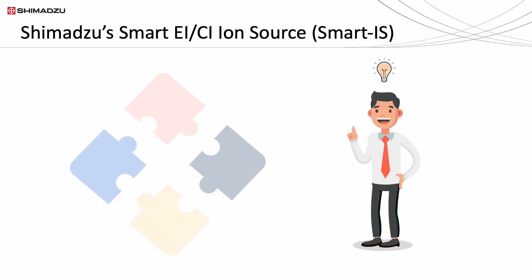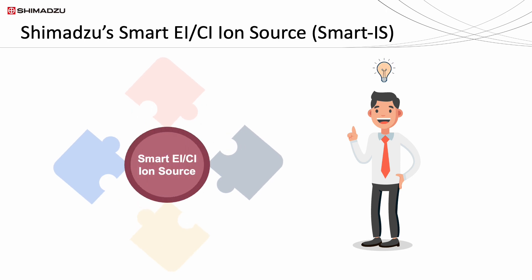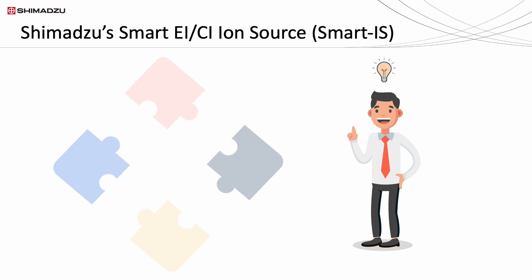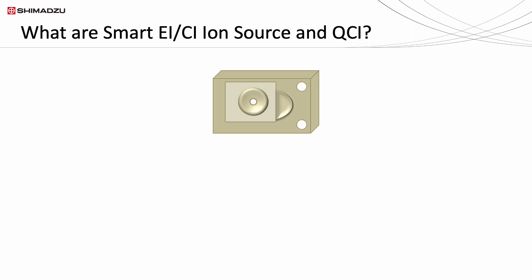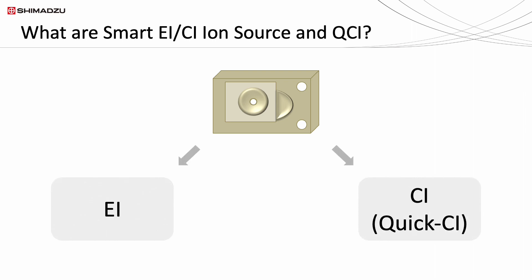Thus, the smart EI-CI ion source, or smart IS in short, is developed in an attempt to solve these issues. The smart IS is a common ion source that is capable of analyzing samples in both EI and CI modes without changing the ion source. The CI data acquisition by using this ion source is called quick CI, or QCI.